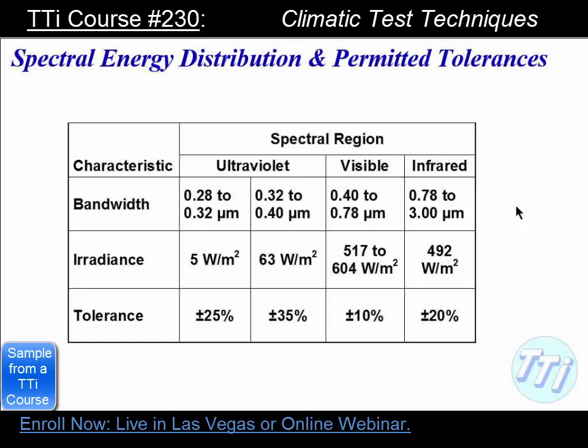This is the basic spectral chart used with most of these tests. Ultraviolet has been broken into A and B, though most of the charts just show the bandwidth of ultraviolet, visible, and infrared. The tolerance is different for each band — you have a 35% plus-or-minus tolerance for ultraviolet. I have never seen that high a percentage of tolerance on anything else, but it's only 10% in the visible light range.